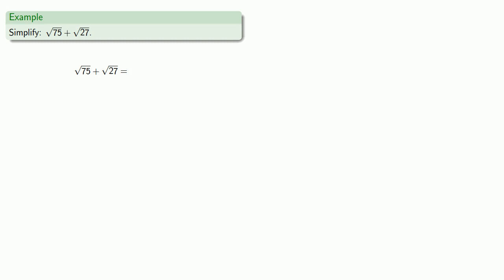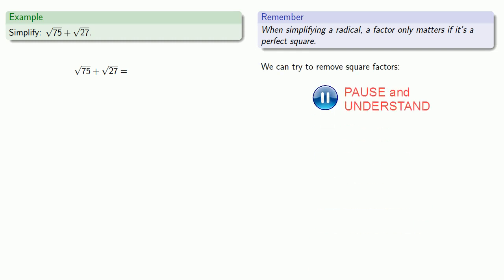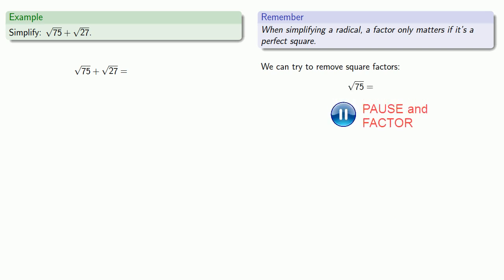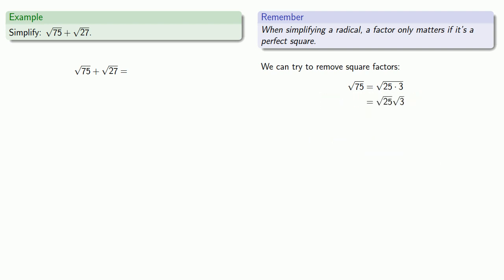When simplifying a radical, a factor only matters if it's a perfect square, so we try to remove the square factors. Square root of 75 — I can factor 75 as square root of 25 times 3. The square root of a product of positive numbers is the same as the product of the square roots, so we rewrite this as square root of 25 times the square root of 3. And the square root of 25 is 5, so this becomes 5 square roots of 3.